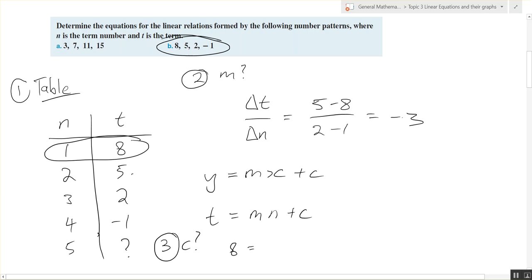So you did this first one. T equals eight. M equals, we just figured it out, negative three. N equals what? One. And we don't know the C yet.